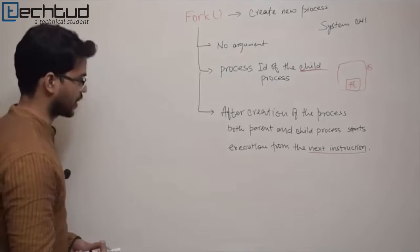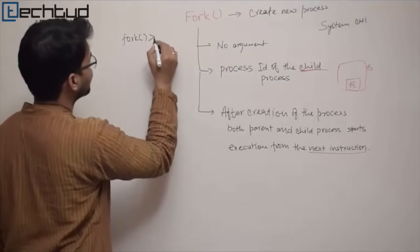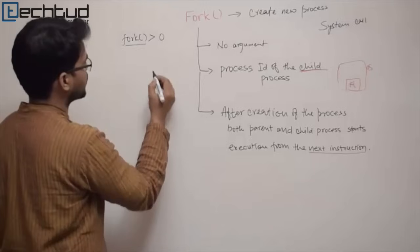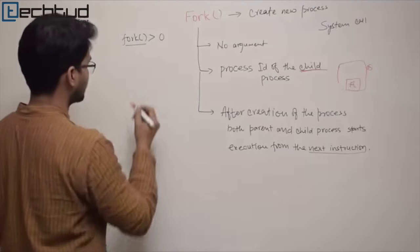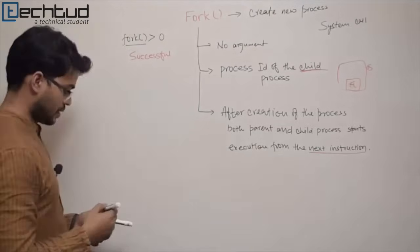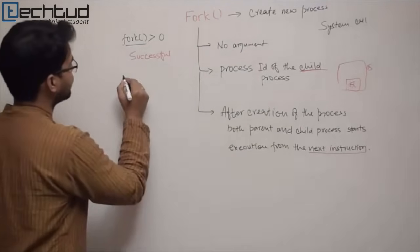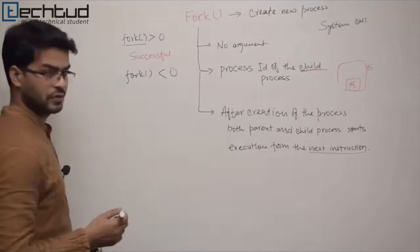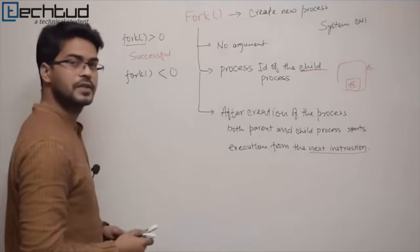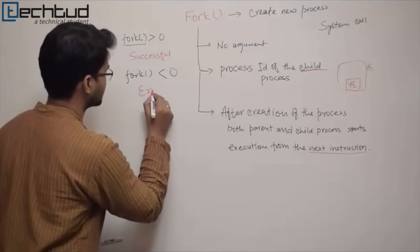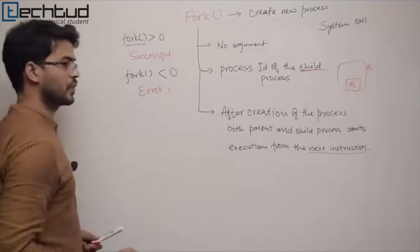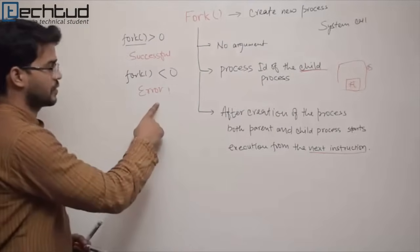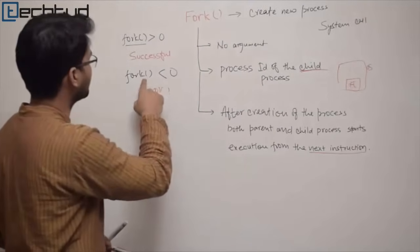If the value returned by fork is greater than zero, that means successful creation. But you also get a negative value — less than zero — only in case of some error, such as when your system is out of memory and a new process cannot be created.